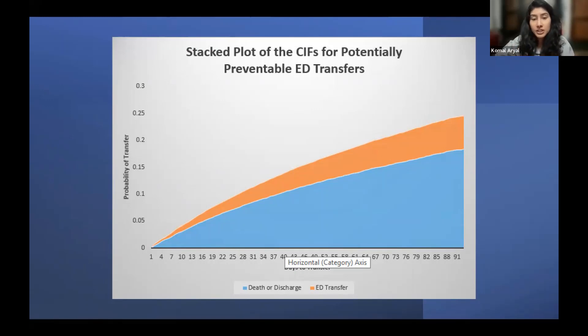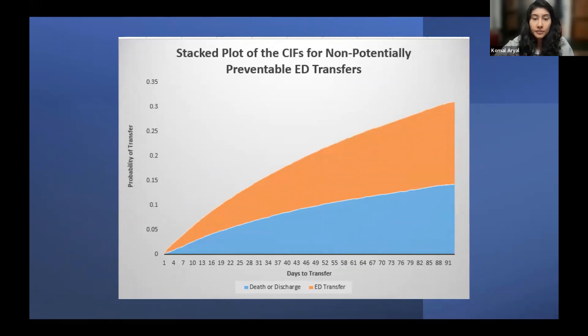The cumulative incidence function of the PPED transfer was 6.25. And for a non-PPED, it was 16.8. So as you can see, the CIF is higher for those experiencing a non-PPED transfer, which is consistent with the literature.